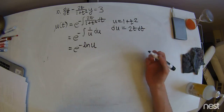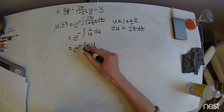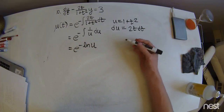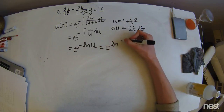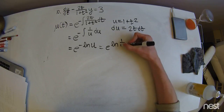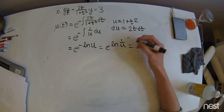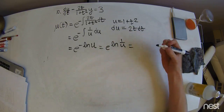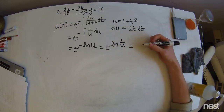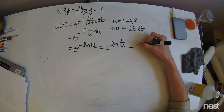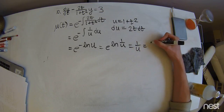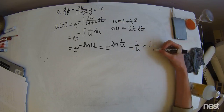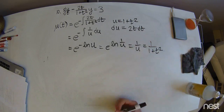Now we can use log rules to take this negative into the exponent. And, of course, e cancels out the natural log because they're inverses of each other, so we're just going to get 1 over u. Substituting back in for u, we get 1 over 1 plus t squared.